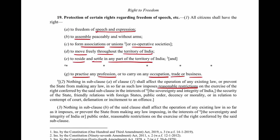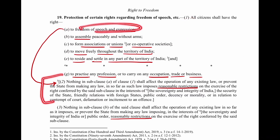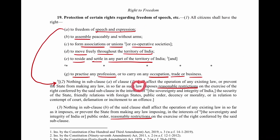The constitution gives reasonable restrictions for each right. For freedom of speech and expression under subclause (a), the state can make laws imposing reasonable restrictions. The grounds for restricting speech and expression are: sovereignty and integrity of India, security of the state, friendly relations with foreign states, public order, decency or morality, contempt of court, defamation, or incitement to an offence. It is a very long list because speech and expression is a very broad right.